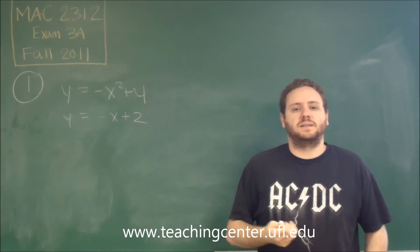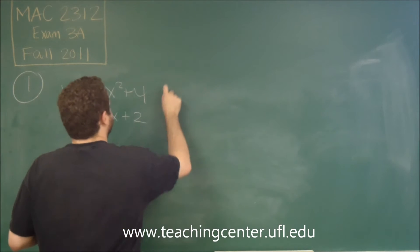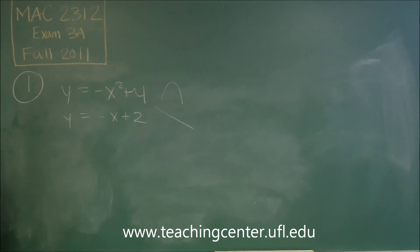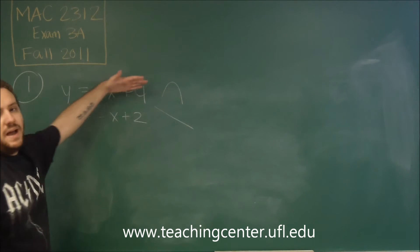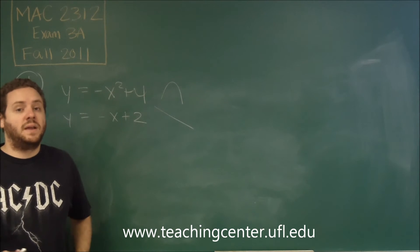So if these two are intersecting and enclosing some type of area, so we have this shape, and we have this type of line, the only way that they could enclose any sort of area is if the parabola is higher. So we know that this is going to be the higher function, we just need to know where they intersect.